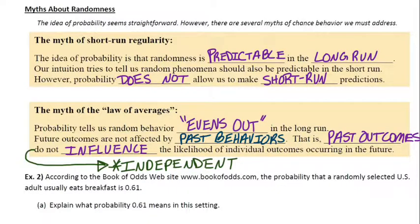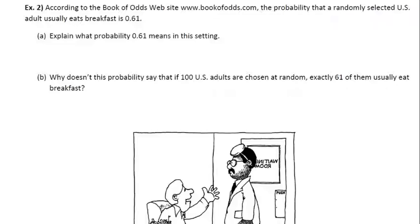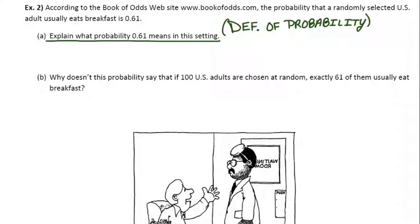So, avoid making mistakes regarding these two myths. Let's look at the final example here. It says, according to the Book of Odds website, www.bookofodds.com, the probability that a randomly selected U.S. adult usually eats breakfast is .61. Apparently, they have a lot of odds on that website. Explain what probability 0.61 means in this setting. When you see a question like this, it's really asking you to refer to the definition of probability, and then use it in the context of the study. We looked at the definition of probability already, but that's what we need to invoke here. The definition of probability, and we'll just use it in context.